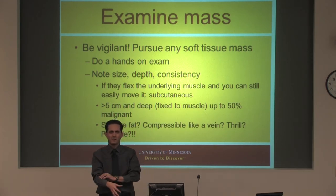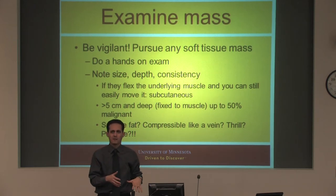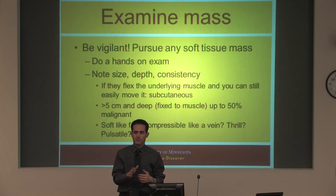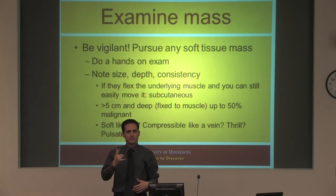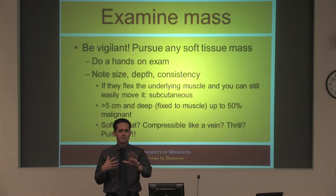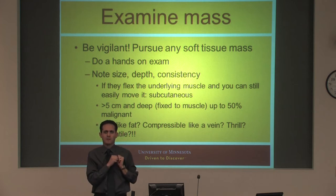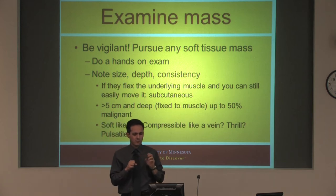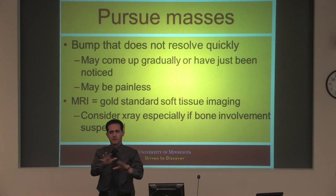Other exam findings: if it's soft, kind of like fat, that's helpful — lipomas are what you're going to see most in the subcutaneous tissue. Is it compressible like veins? Could it be a hemangioma? Does it have a thrill? Is it pulsatile? Could it be a pseudoaneurysm from a penetrating injury or a big AV malformation? I have two patients with giant AV malformations — one you can put a stethoscope to and hear distributed flow. You don't want to stick a needle in that because you'll get arterial flow right in your exam room.